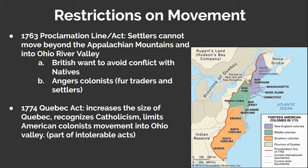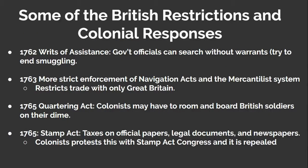The French were mostly Catholic, so the British extended the colony of Quebec, which was a Catholic colony. This angered the largely Protestant British colonists. In 1762, the writs of assistance were passed, which gave government officials the ability to search without warrants, with the goal of trying to end smuggling.